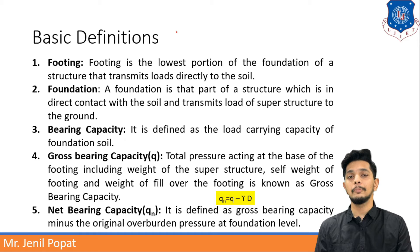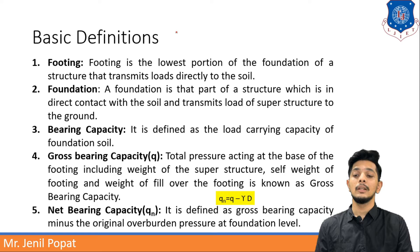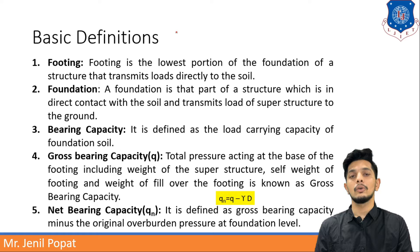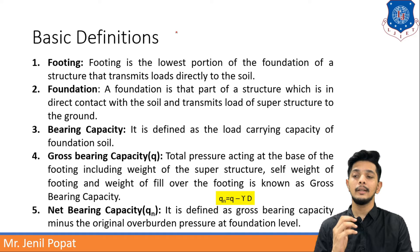Net bearing capacity, symbolized as qm, is defined as gross bearing capacity minus the original overburden pressure at foundation level. Basically, overburden at foundation level should be subtracted from gross pressure. The formula is: qm = q − γ·D, where γ is the unit weight of overburden.